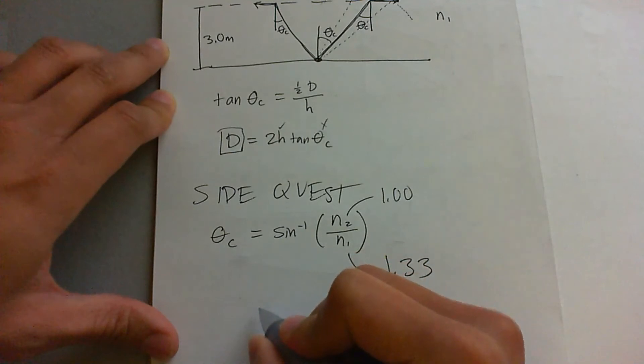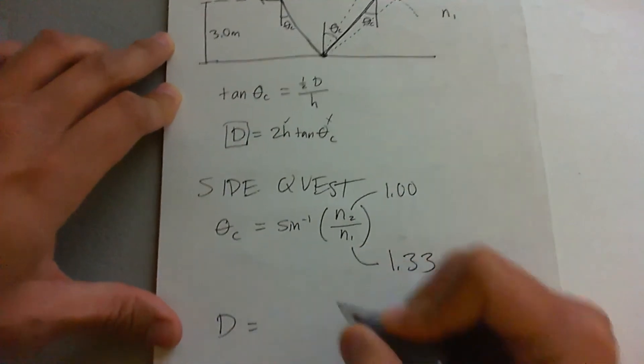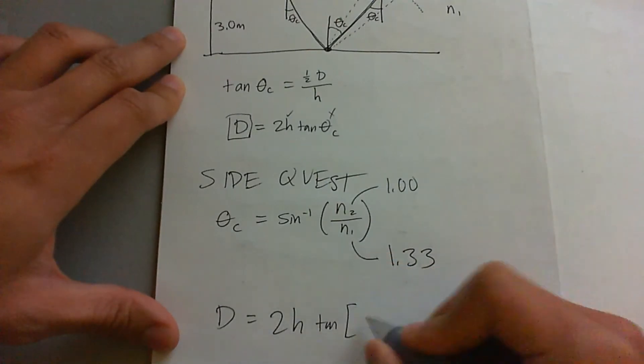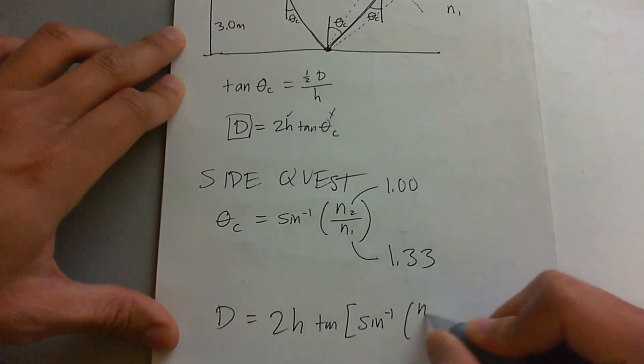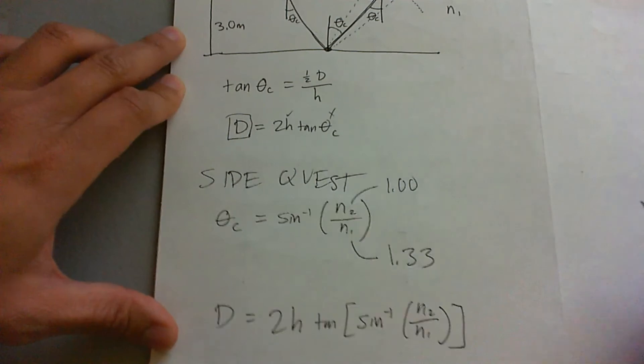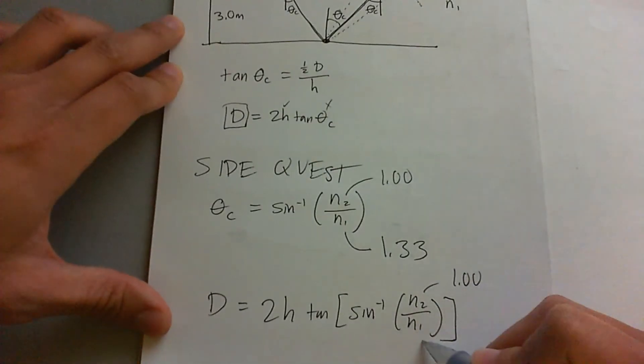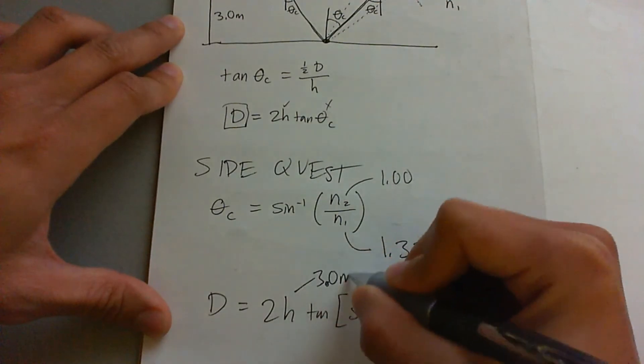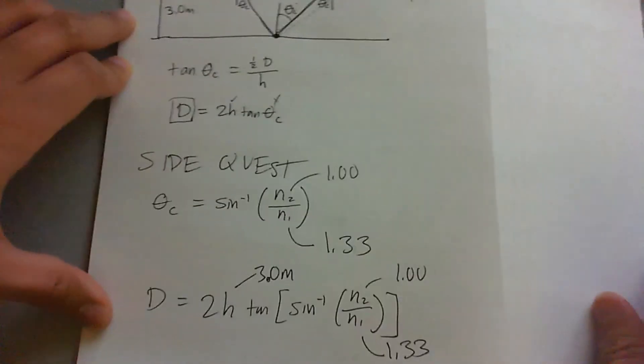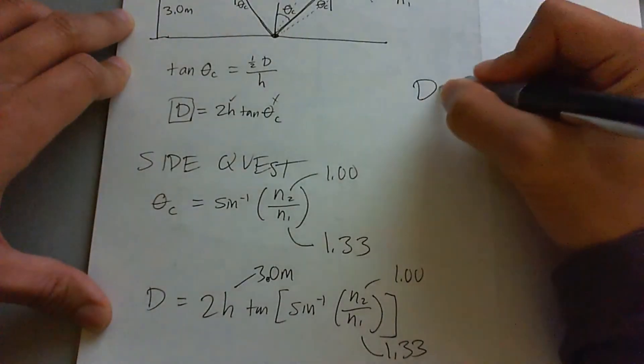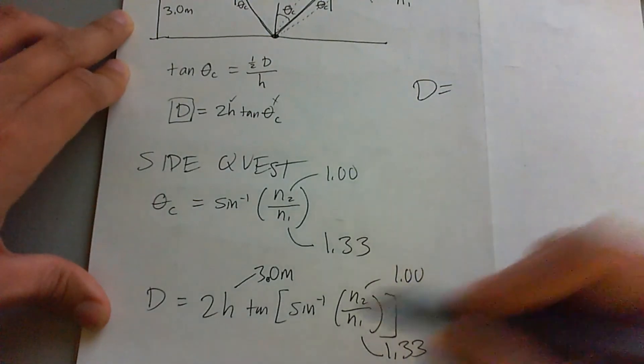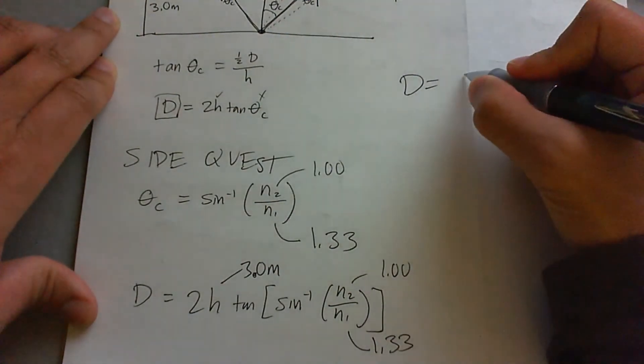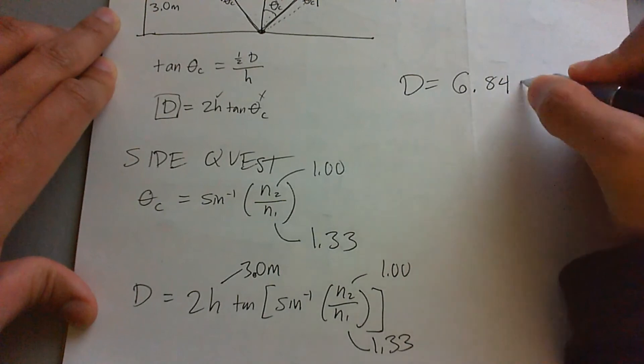We're going to plug this into D, which is then going to be 2H tan of that. Now plugging in the numbers, we finally get D. D is going to be 2 times 3 times tan of inverse sin of this right here. There's only going to be one value that comes out with the calculator: 6.84 meters.